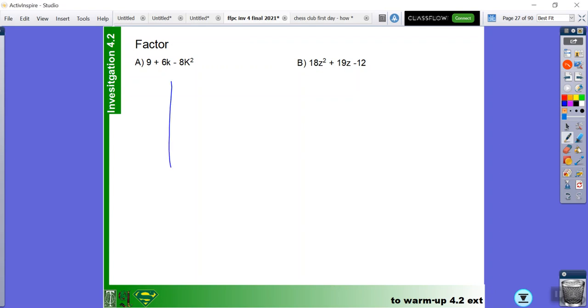First I made a table that was possible factor and possible sum. Then I found factors with negative 8k, and I knew that negative 4 and positive 2 was, so then I tried negative 4k and then positive 2k.